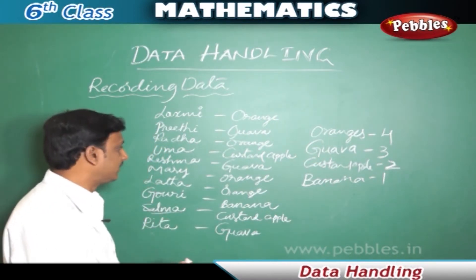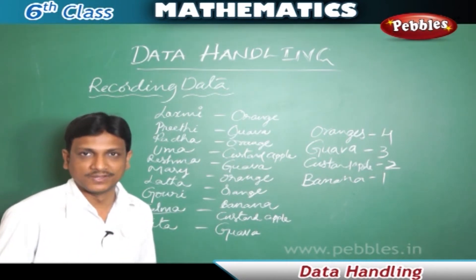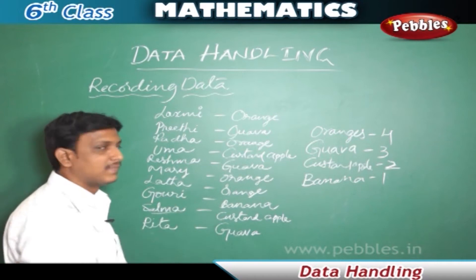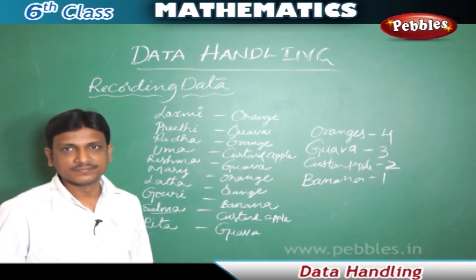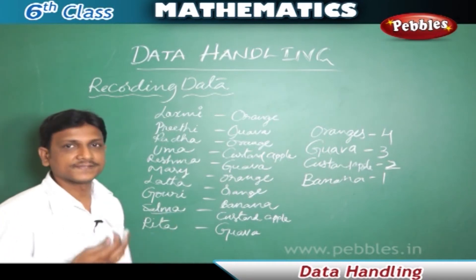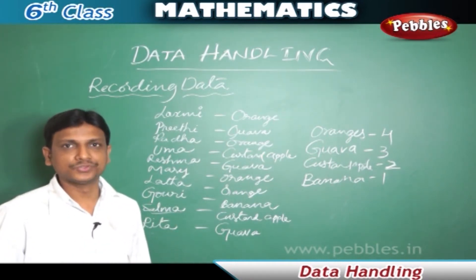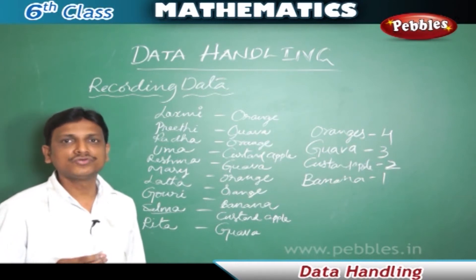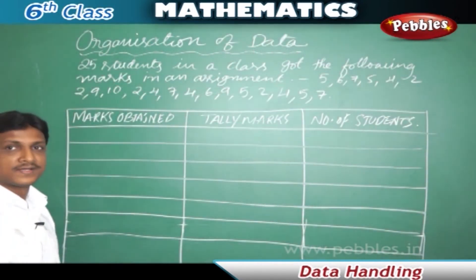If the list is bigger — say Lakshmi had 15 friends — it would be very difficult to count manually. When the data is large and the information is more, we need some other methods to organize the data. Now we will learn how to organize data.